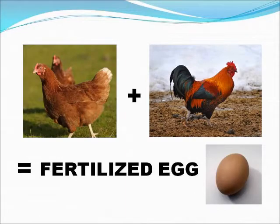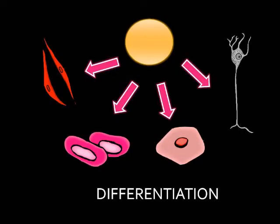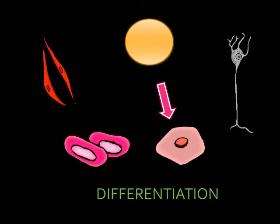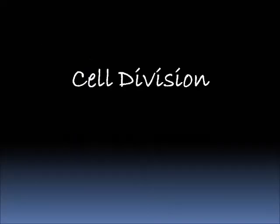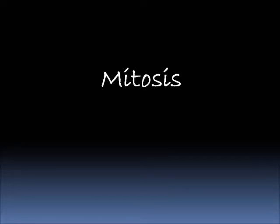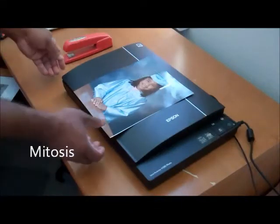First, an egg has to be fertilized. Then cells divide. Finally, cells have to differentiate, which means becoming different types of cells. Cell division in non-reproductive cells involves both mitosis and cytokinesis.